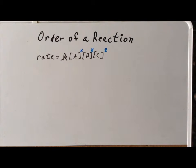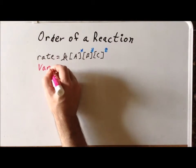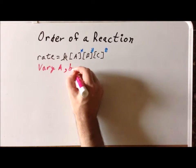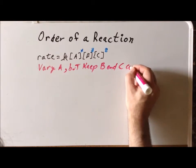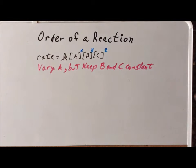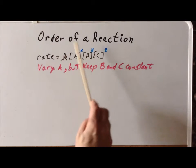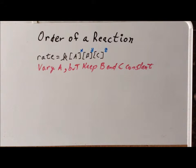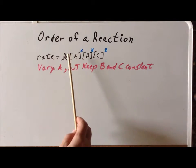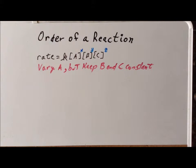Our first step will be to vary the concentrations of A but keep B and C constant. One of the tricks of this technique is that we will vary the concentration of one of the reactants while holding every other reactant's concentration constant.